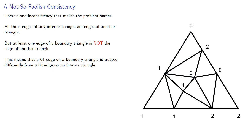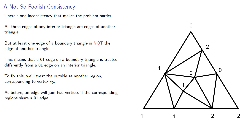To fix this, we'll treat the outside as another region corresponding to some vertex we'll call V0. And as before, an edge will join two vertices if the corresponding regions share a 01 edge.